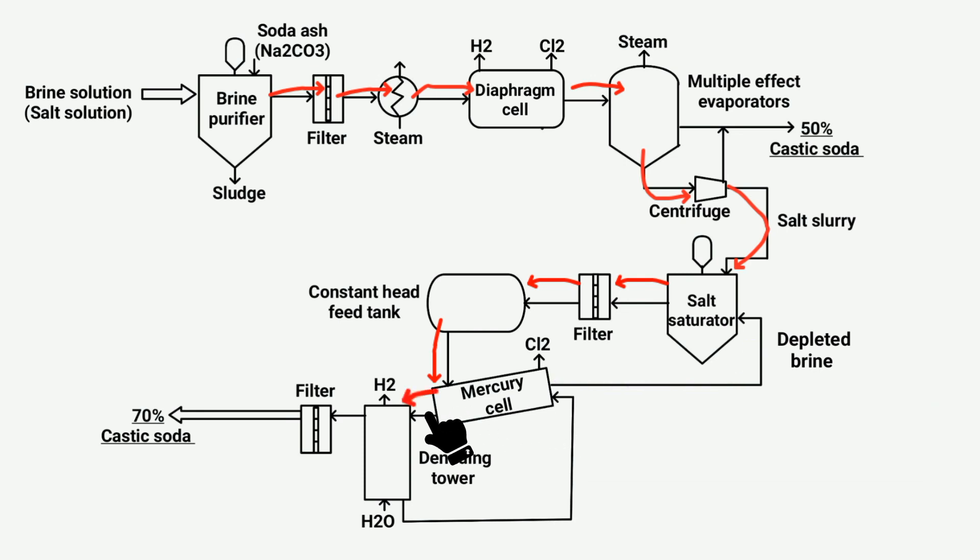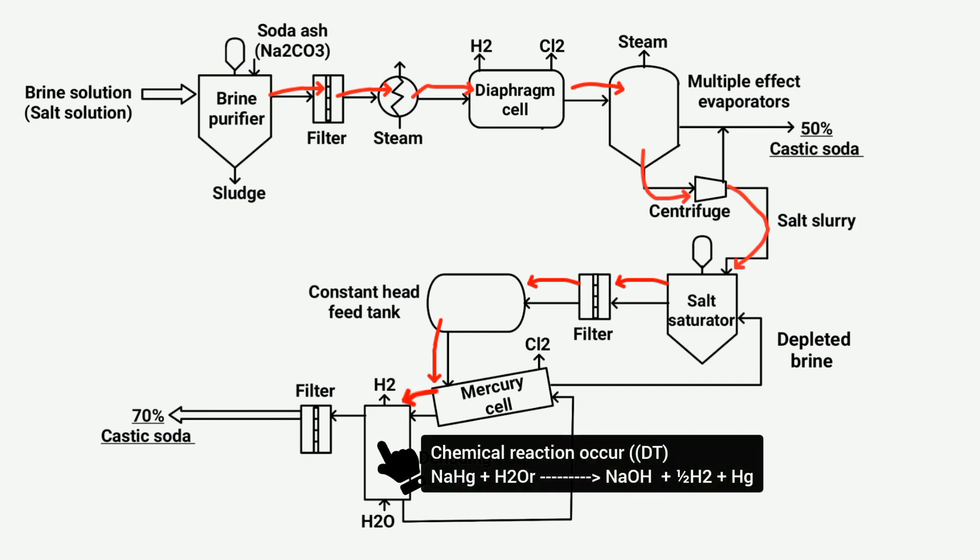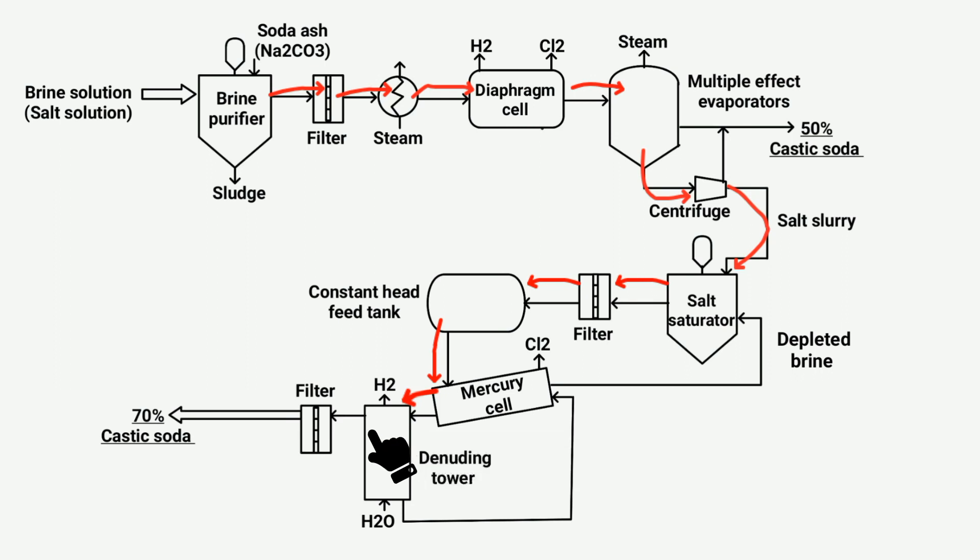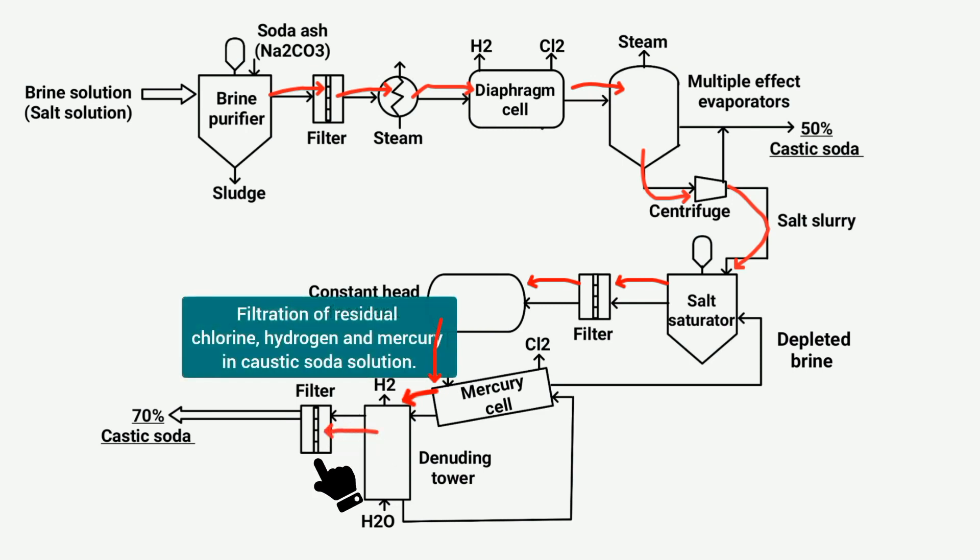The solution containing caustic soda and sodium amalgam from the mercury cell is directed to the denuding tower. In the denuding tower, sodium amalgam reacts with water to produce caustic soda. The solution obtained from the tower, known as caustic soda solution, has a higher concentration of caustic soda and undergoes filtration.